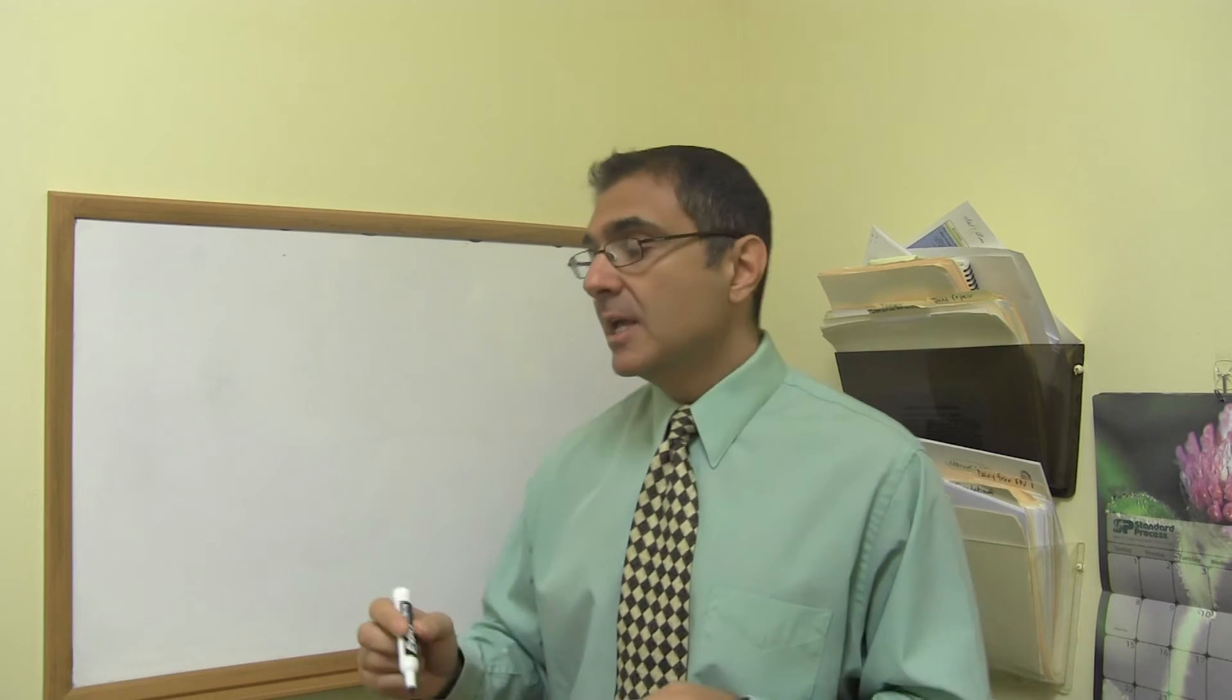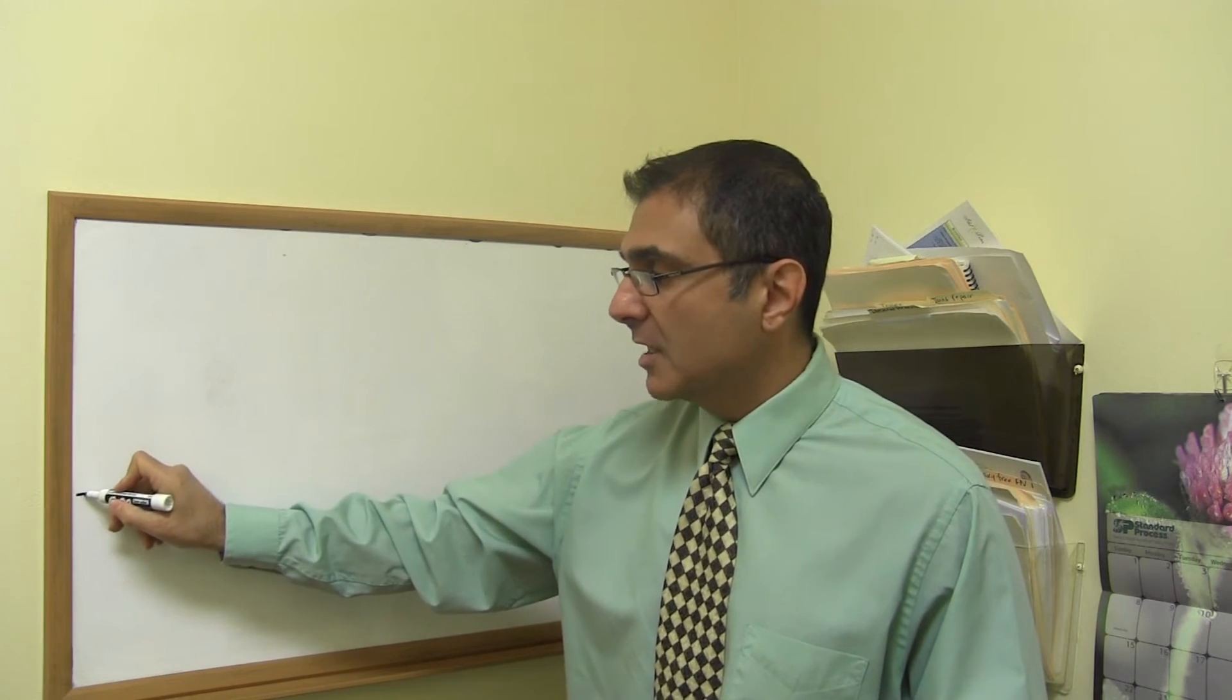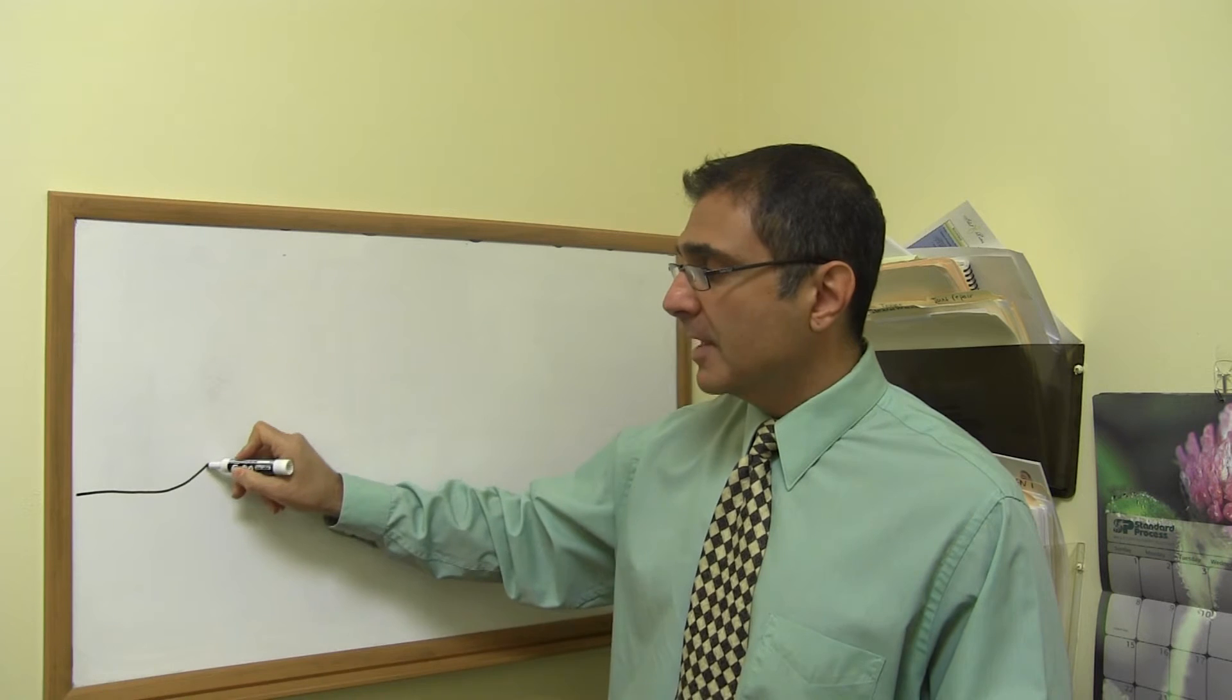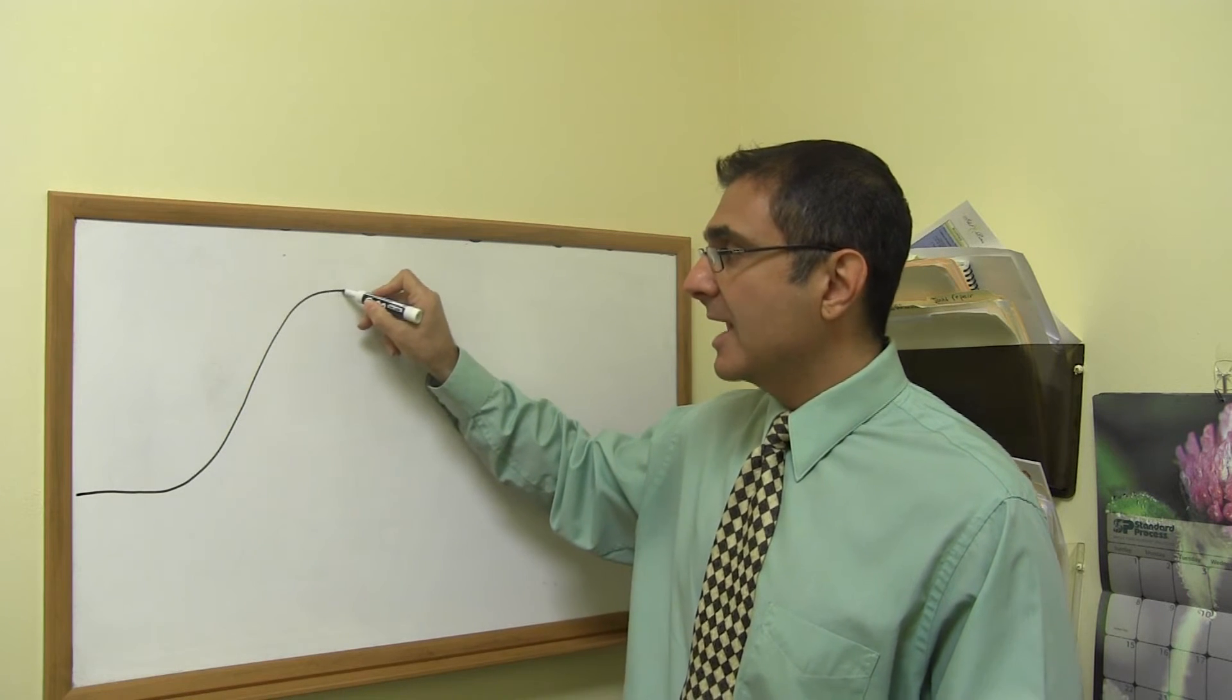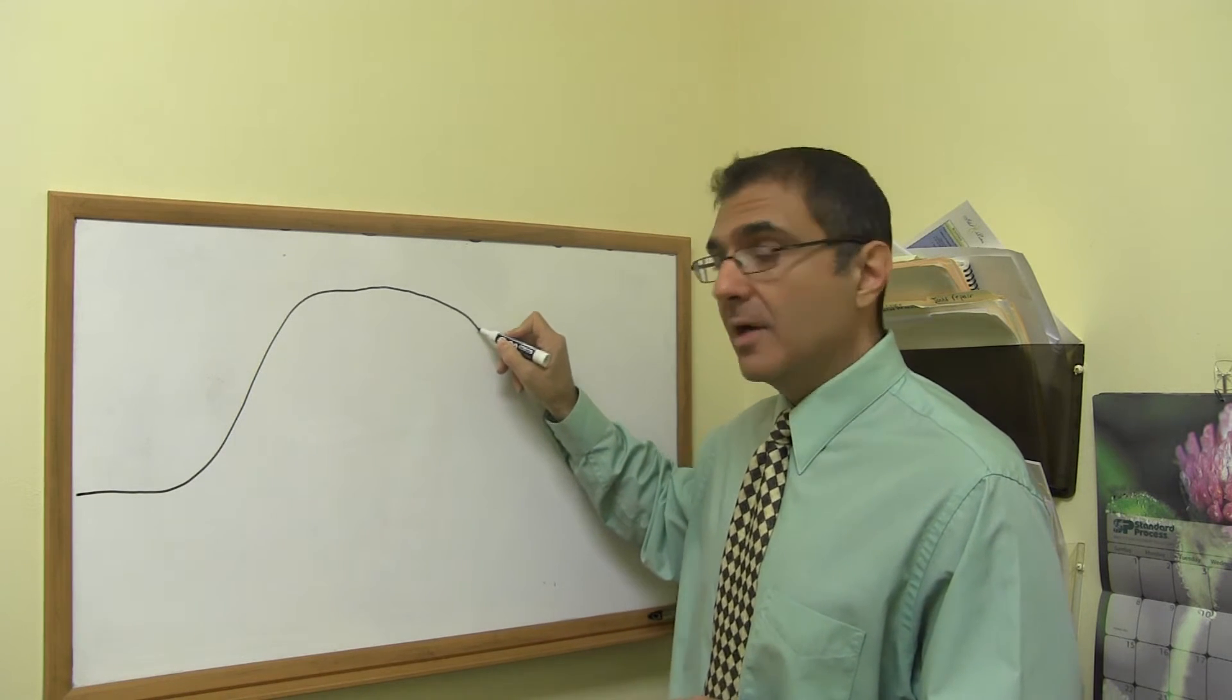So when we did this analysis on her, what we found was a problem with her progesterone. Now, it's interesting because progesterone during menstruation is low. And then in the middle of the month it starts to rise and it comes high.